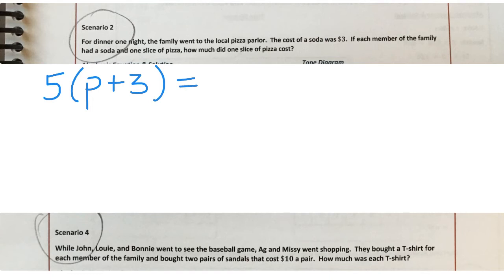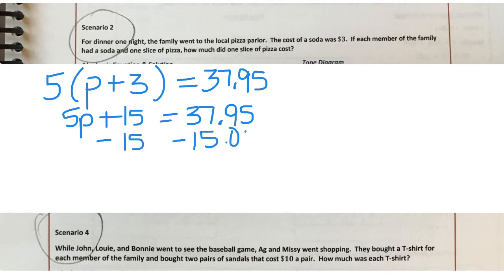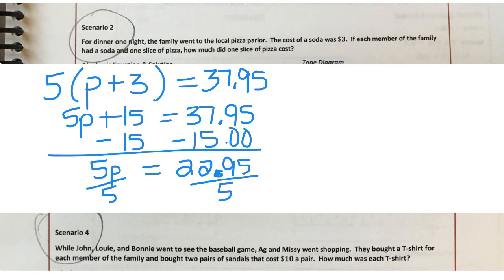And then from the table on the previous page, you can see that the total that they spent was $37.95. So using our first strategy, I can multiply the five through. So I get 5P plus 15 equals $37.95. And then we subtract 15 from both sides. And then I get 5P equals $22.95. And then from there, I would divide both sides by five. And I find out that each piece of pizza is going to cost $4.59.